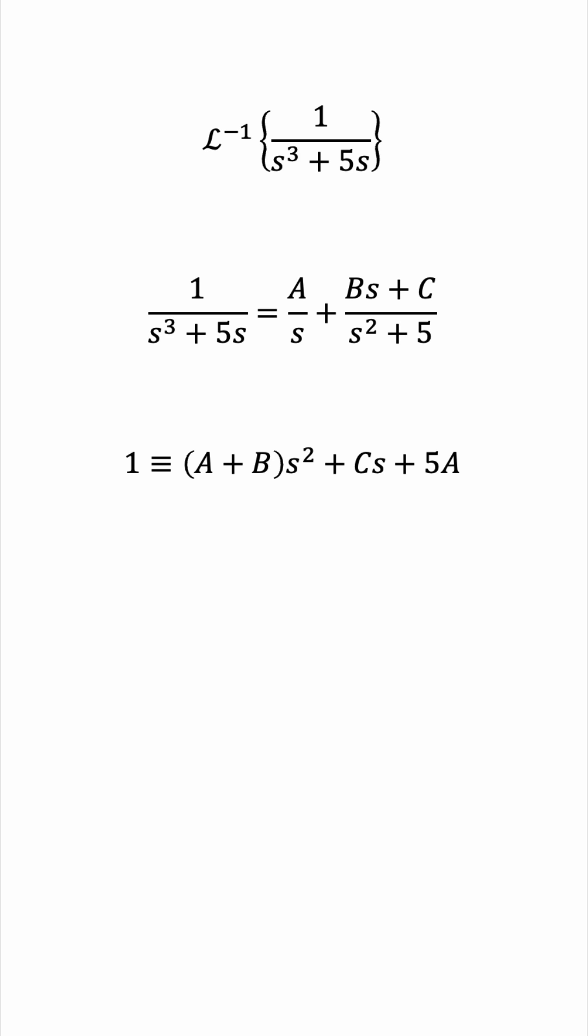The coefficient of s squared, a plus b, must be zero. The coefficient of s, c, must also be zero. And the constant 5a must be equal to one. This gives us a equals one-fifth.